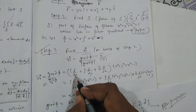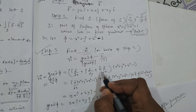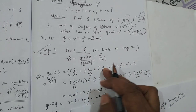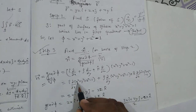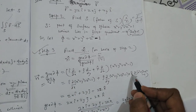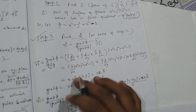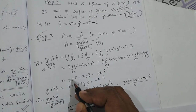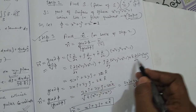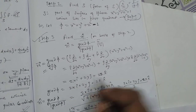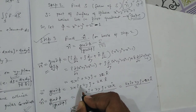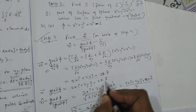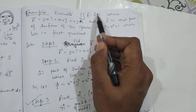∇ (nabla) is defined as î(∂/∂x) + ĵ(∂/∂y) + k̂(∂/∂z). Applying this to φ = x² + y² + z² − 1, we get the partial derivatives: 2x, 2y, and 2z. So n⃗ = ∇φ = 2xî + 2yĵ + 2zk̂.